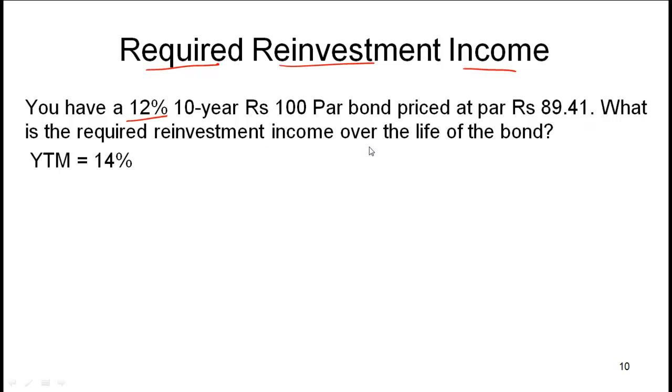Now if you do your calculations, let's say that this is a semi-annual bond. If you plug in your numbers you will notice that the yield to maturity is 14%. So with yield to maturity of 14% and you are making an investment of 89.41, how much are you expecting over the 10-year period?